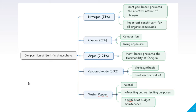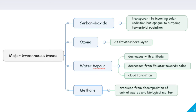Nitrogen and argon are inert gases — undirected gases. Inert gases control oxygen's flammability in the atmosphere. Nitrogen and other inert gases serve as the basic role in the atmosphere — they are important constituents for all organic compounds, combustion, and living organisms. Carbon dioxide plays a role in photosynthesis, acts as a greenhouse gas, and in the heat energy budget. Water vapor has refracting and reflecting properties and helps in the maintenance of the heat budget. Carbon dioxide is the major greenhouse gas.